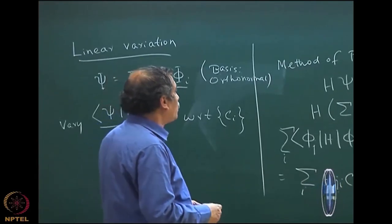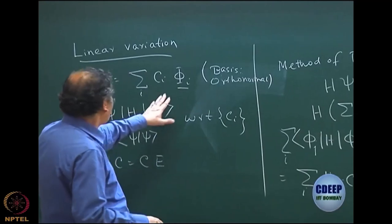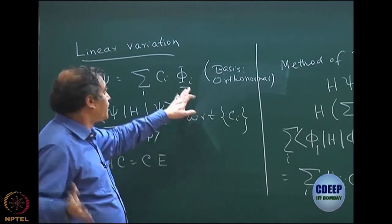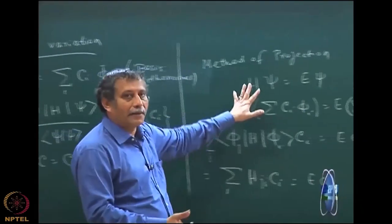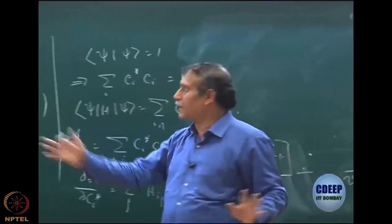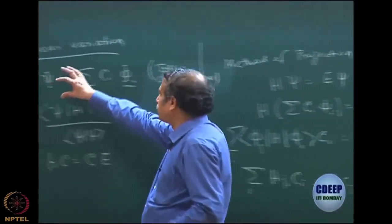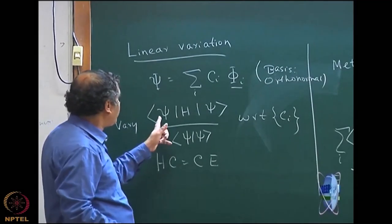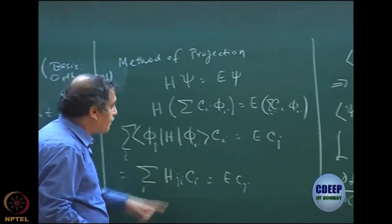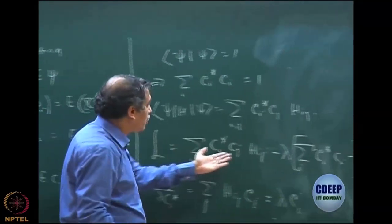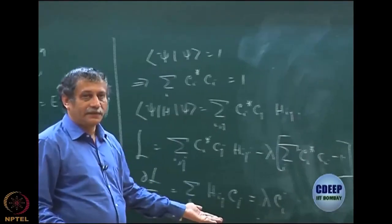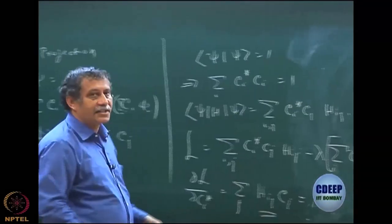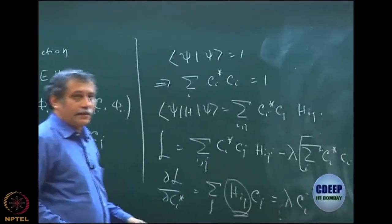To derive the CI equations: remember our phi_i's are now the basis of Slater determinants. The basis is the basis of Slater determinants — these are n-electron determinants. The general problem allowed psi and phi to be anything — one electron, two electron, does not matter. But for our problem, this wave function is an n-electron wave function and these are n-electron Slater determinants.